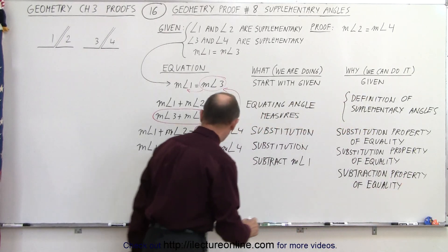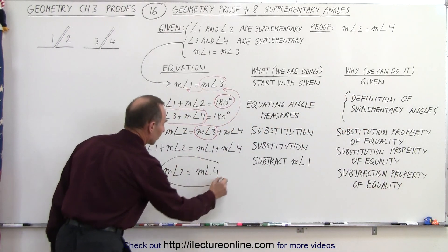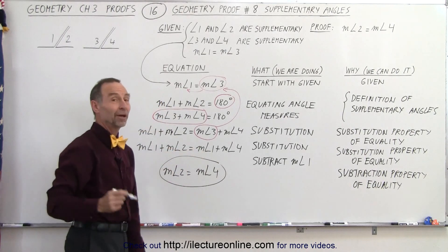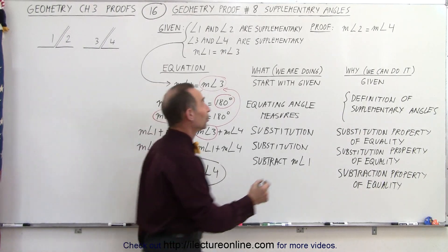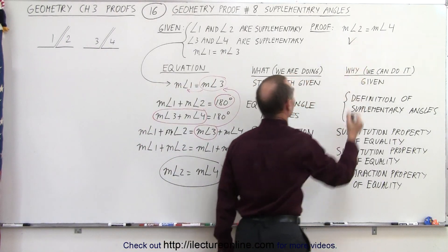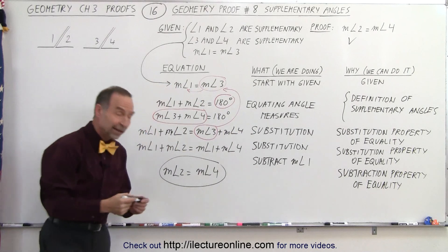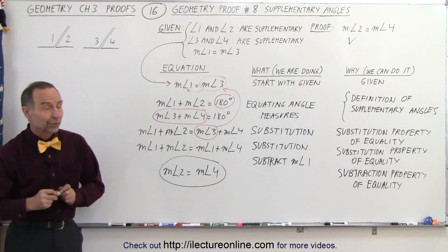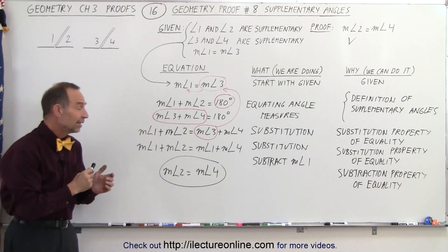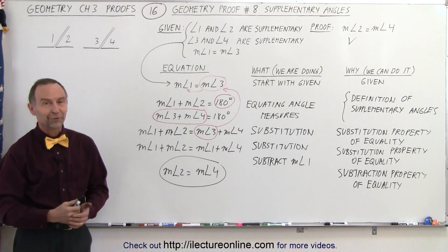And notice that this result looks exactly the same as what we were trying to prove in the first place. Therefore, we've proven that the measure of angle 2 indeed equals the measure of angle 4.